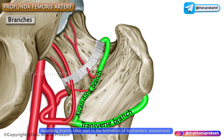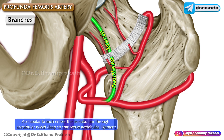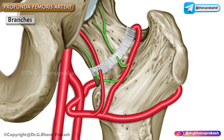An important branch of the medial circumflex femoral artery is the acetabular branch. This acetabular branch arises before the terminal branches and enters the acetabulum through the acetabular notch, deep to the transverse acetabular ligament. The posterior retinacular branches are extremely important and are called end arteries.